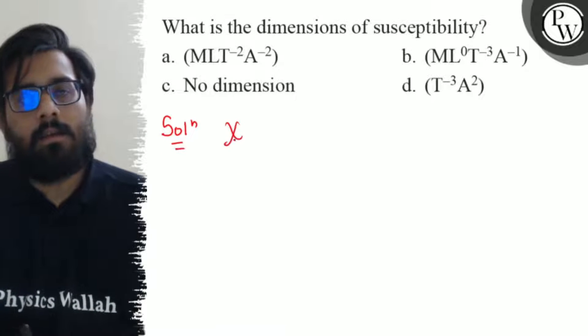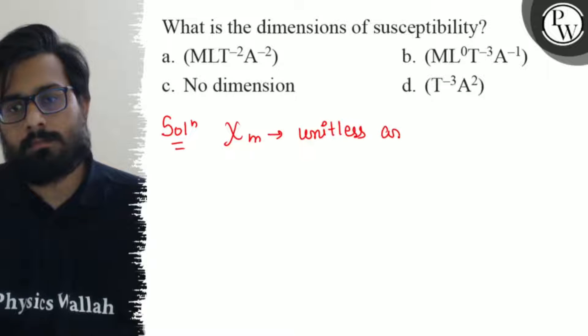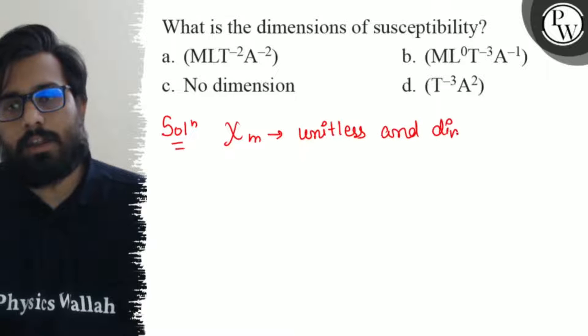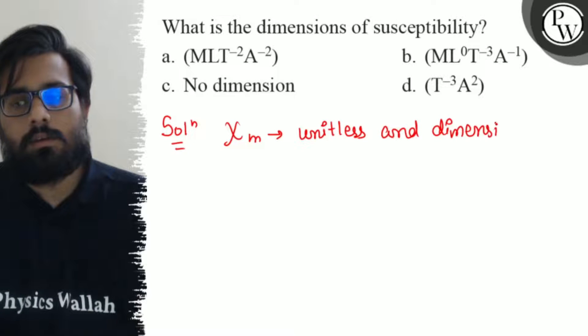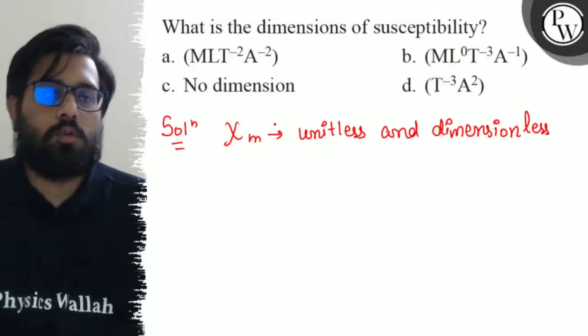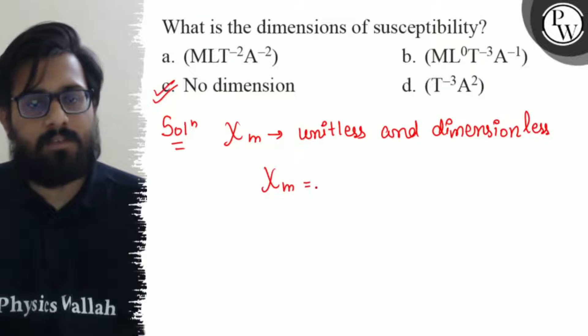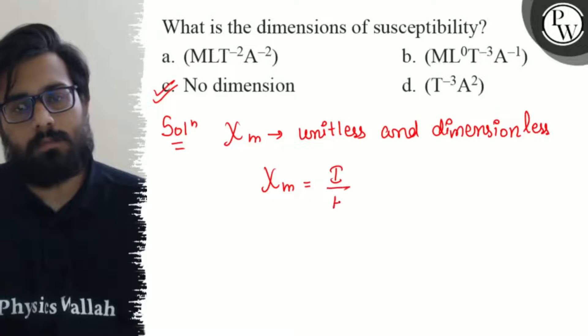So here in this question, the susceptibility is a unitless and dimensionless quantity. So your option C definitely suits this. And for the susceptibility we have a formula of χm = I/H.